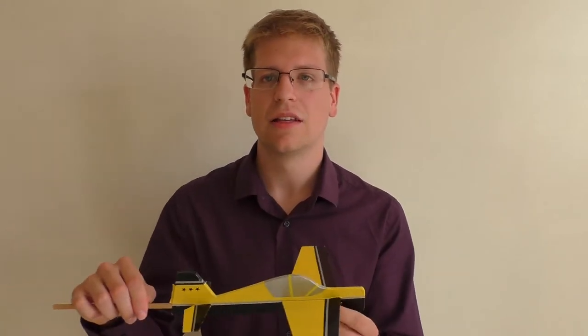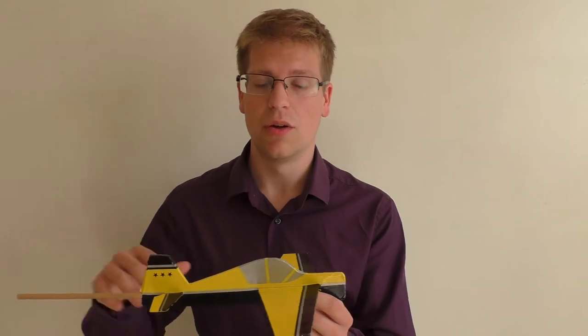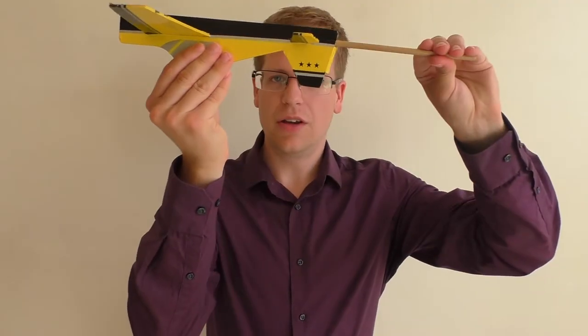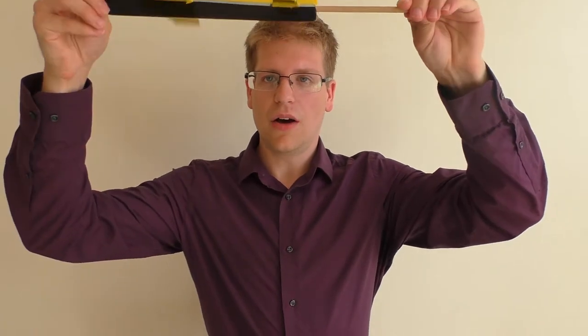So what we're going to be doing with the Immelman turn is we're going to come in level flight, lower down, not too low mind you, we're going to go into an inside loop and then at the top of the loop here we're then going to do a half roll and then carry on flying at level flight.